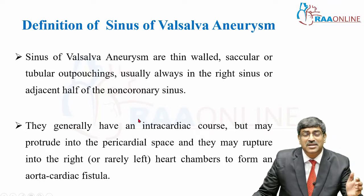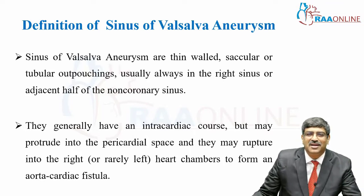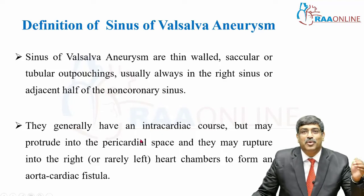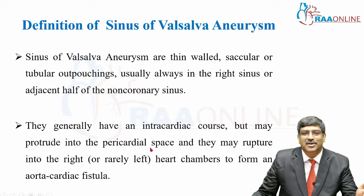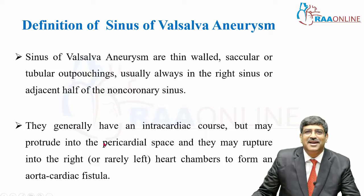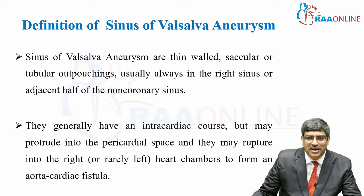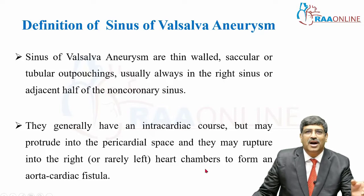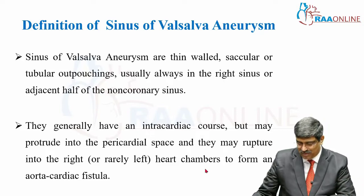Then what is a ruptured Sinus of Valsalva? When this aneurysm has an intracardiac course, it might protrude into various chambers or into the pericardial space. That is called a ruptured Sinus of Valsalva. It usually ruptures into the right — or rarely, very rarely — the left heart chamber, to form an aortocardiac fistula.